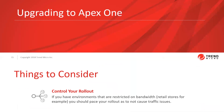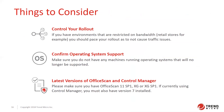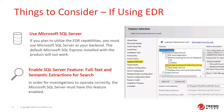When upgrading to Apex One, there are a few things to consider. Control your rollout — if you have bandwidth-restricted environments, pace the rollout to avoid traffic issues. Confirm operating system support and make sure no machines are running unsupported operating systems. The latest versions of Office Scan and Control Manager are best for upgrading; however, you can upgrade from Office Scan 11 SP1, XG, or XG SP1 directly to Apex One. If currently using Control Manager, we recommend being on version seven before upgrading.